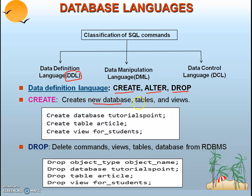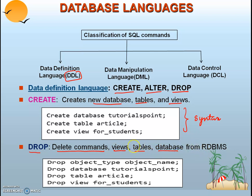The CREATE command is used for creating new databases, tables, and views. The DROP command is used for removing or deleting tables, views, and databases. If you want to make any changes to these object types, you use the ALTER command — write ALTER, mention the name of the data object, and the changes will be saved.